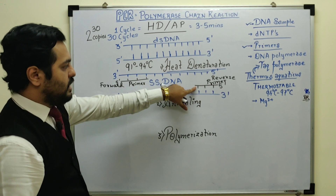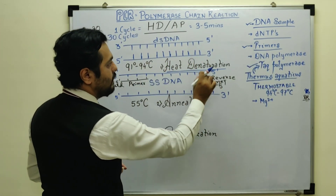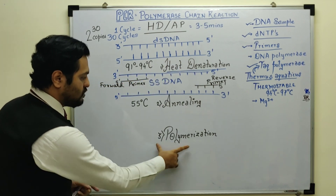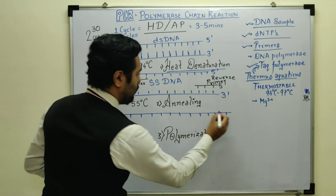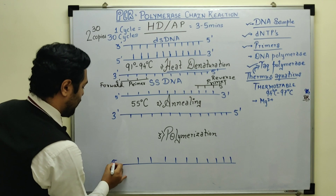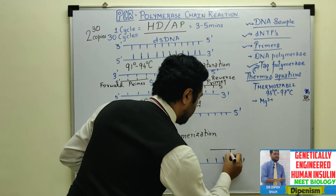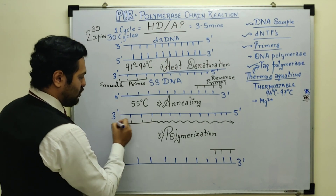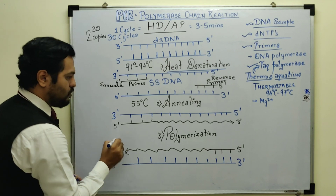After primer attachment, further polymerization is carried out by the enzyme Taq polymerase, which is a DNA polymerase. It adds the complementary bases from the dNTPs that we have provided as raw material. This is the third step of polymerization. On the template running 3' to 5', the new strand is synthesized in the 5' to 3' direction. Similarly on the anti-parallel template running 5' to 3', the new strand is again formed in the 5' to 3' direction. So from one DNA we now get two DNA molecules.